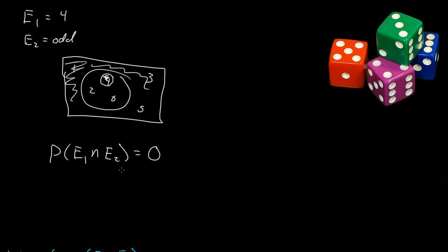All intersection means is, for this case, getting a four and an odd. And that's for rolling a die once.